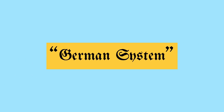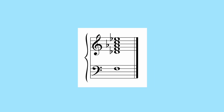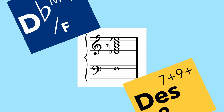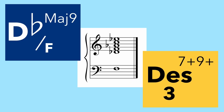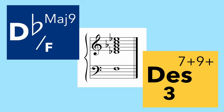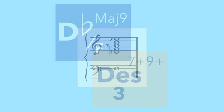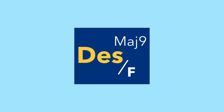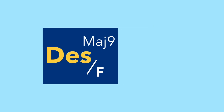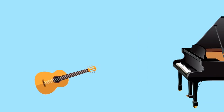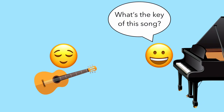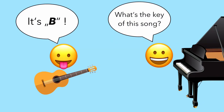The classical German system was not designed for writing jazz chord symbols. So most pop and jazz musicians prefer to use the English system, or sometimes a mix of both systems. But the note B refers to two completely different notes, depending on which system you use.